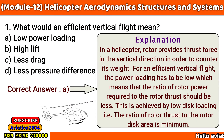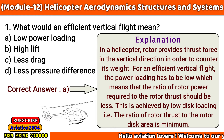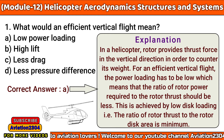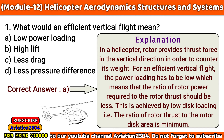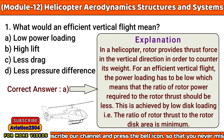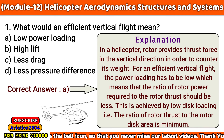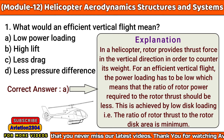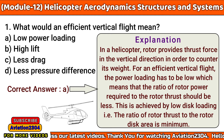Our first question is: what would an efficient vertical flight mean? A. Low power loading, B. High lift, C. Less drag, D. Less pressure difference. The correct answer is A. In a helicopter, the rotor provides thrust force in the vertical direction to counter its weight. For effective vertical flight, the power loading has to be low, meaning the ratio of rotor power required to rotor thrust should be less. This is achieved by low disc loading, where the ratio of rotor thrust to rotor disc area is minimum.